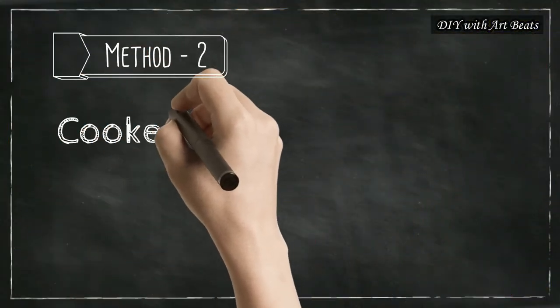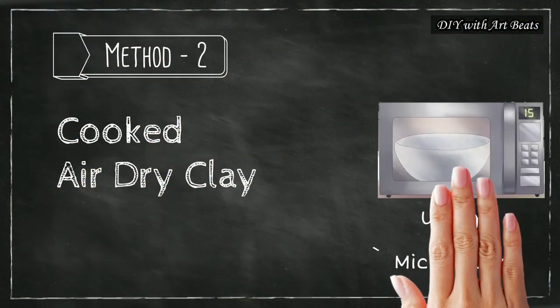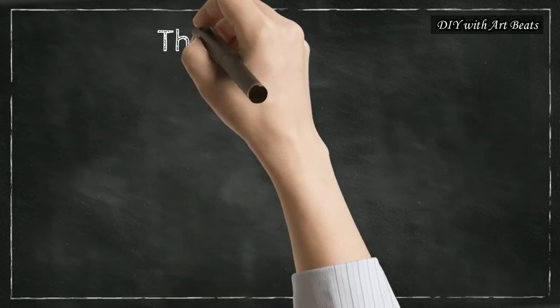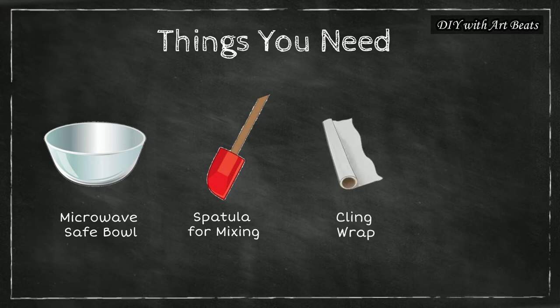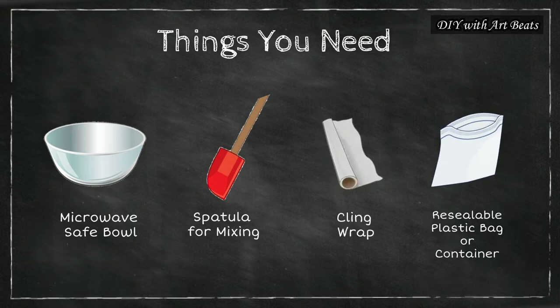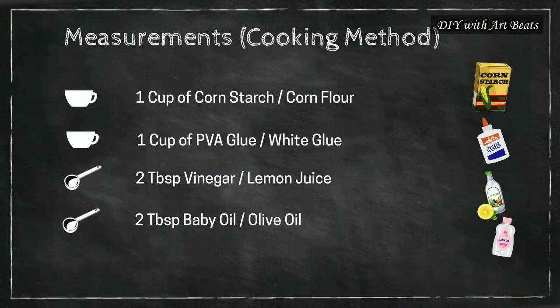In our second method we will see how to make cooked air dry clay using a microwave oven. In this method in place of a non-stick pan we will use a microwave safe bowl and rest all other things are same and we will use the same measurements in this method also.